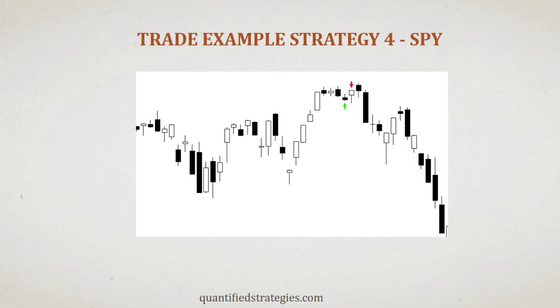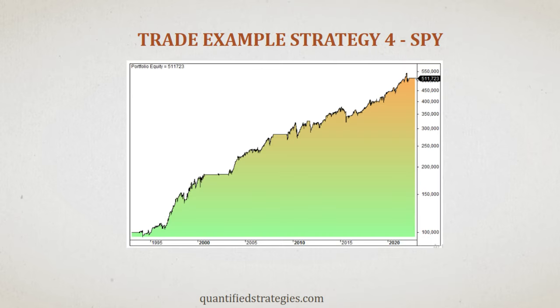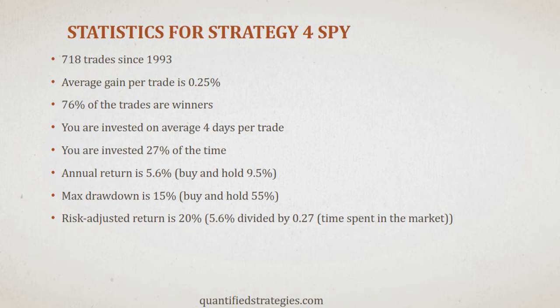The green arrow shows a day when the daily range is lower than the previous six trading days and the price is above the 200-day moving average, so we go long at the close. The next day, S&P 500 rallies and the close is higher than yesterday's high — we exit for a 0.58% gain. The equity shows an upward slope from 1993 to today, with a few setbacks along the way. The statistics are not as strong as the previous three strategies, but as you'll see, the strategy complements the others well.